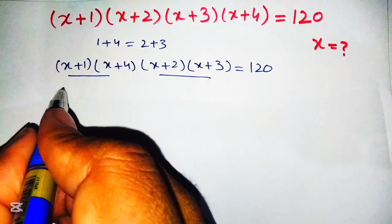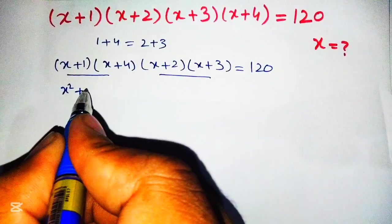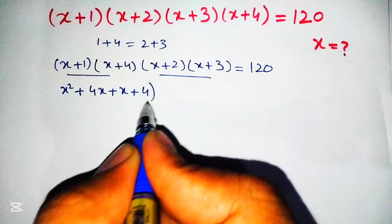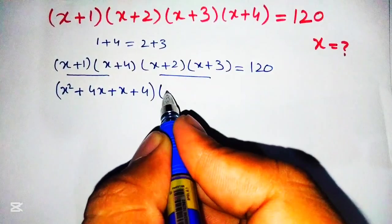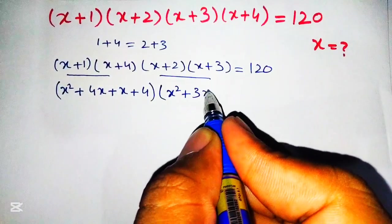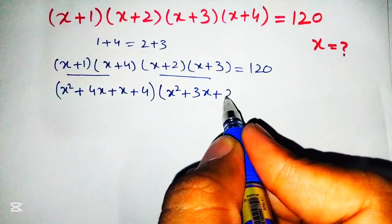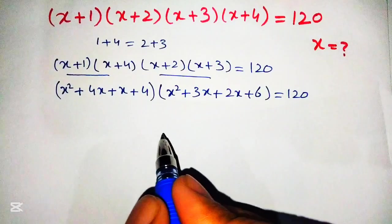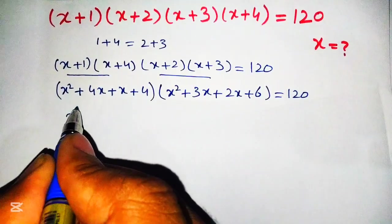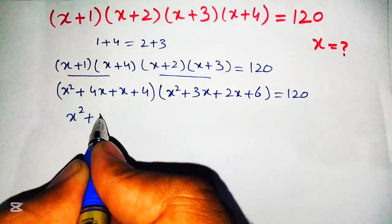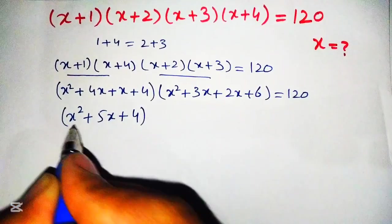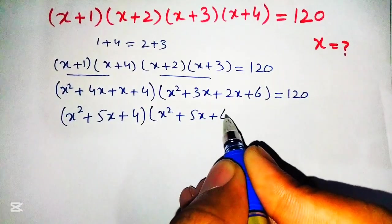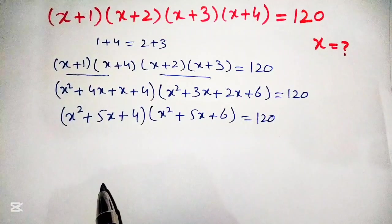Now we multiply these two pairs separately. Multiplying x plus 1 and x plus 4 gives x² plus 4x plus x plus 4, which simplifies to x² plus 5x plus 4. Multiplying x plus 2 and x plus 3 gives x² plus 3x plus 2x plus 6, which simplifies to x² plus 5x plus 6. So we get: x² plus 5x plus 4, into x² plus 5x plus 6, is equal to 120.